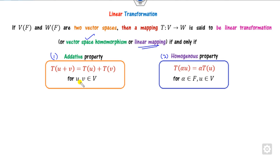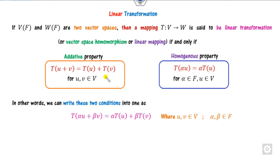That is, whenever you take any two elements U and V from the domain vector space, the additive property holds, and whenever you take the scalar multiple of them, it also holds. Or, if you want to combine these two properties, you can write them as a single term: alpha U plus beta V.